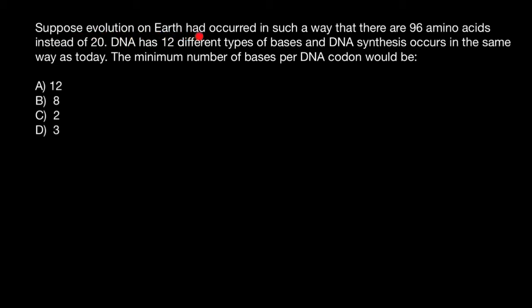Suppose evolution on Earth had occurred in such a way that there are 96 amino acids instead of 20, DNA has 12 different types of bases, and DNA synthesis occurs in the same way as today. The minimum number of bases per DNA codon would be, and you have to choose one of these answers.